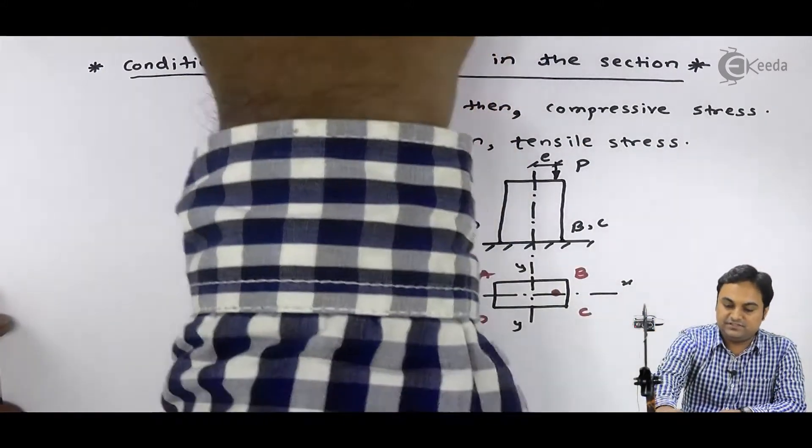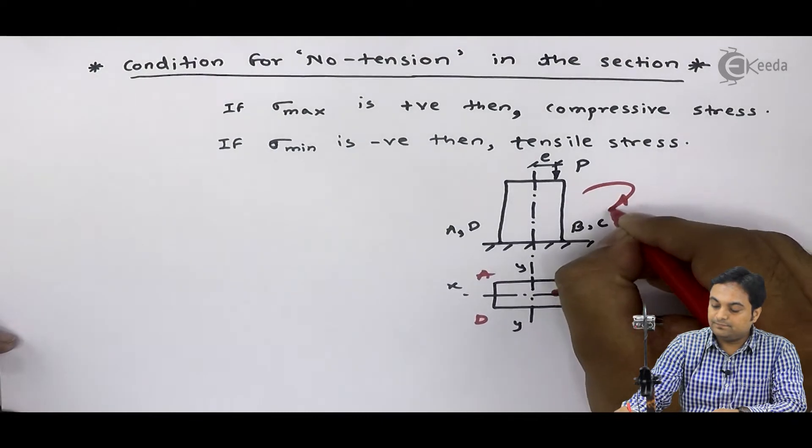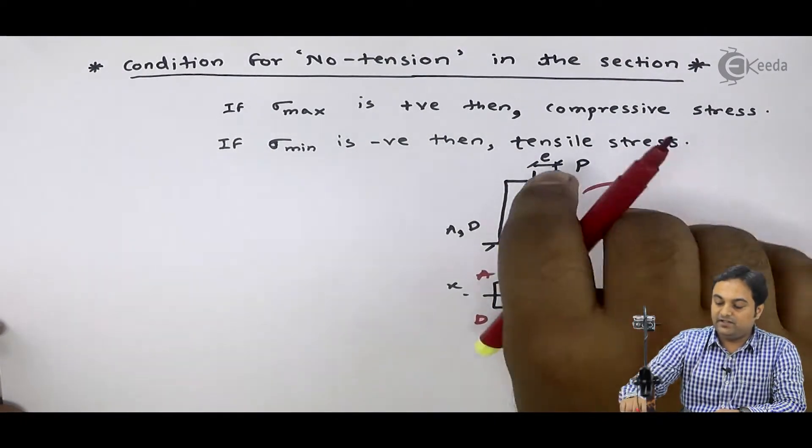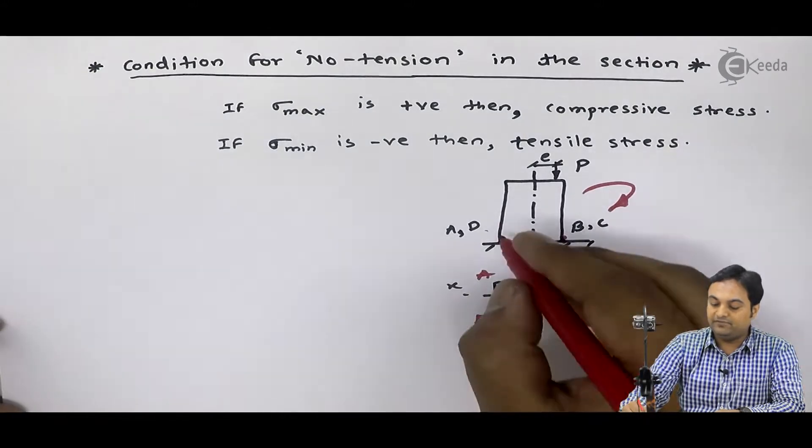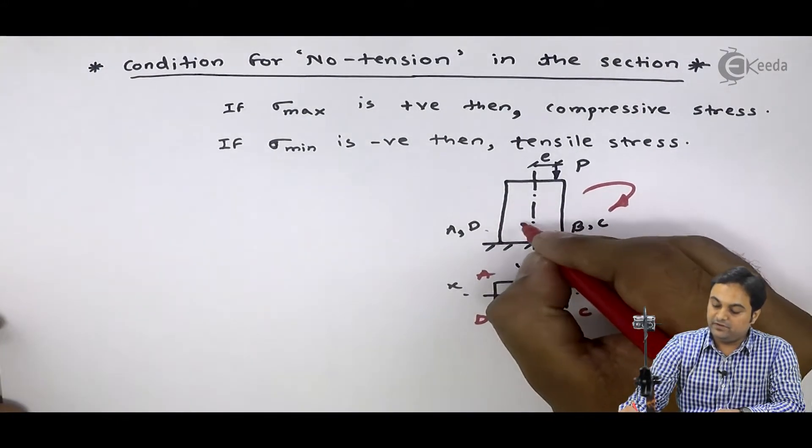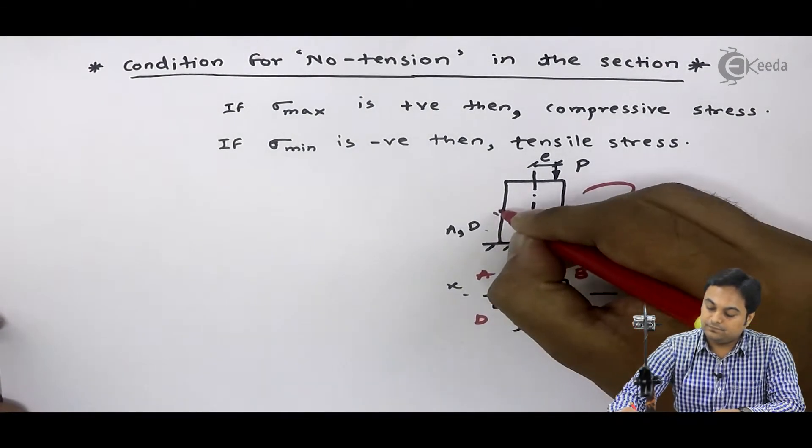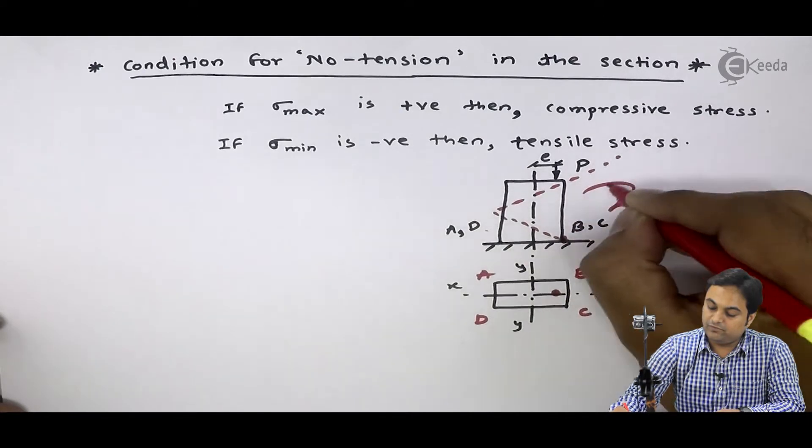It will be turning like this. The ends b, c, they would be pressed or ad would be lifted. That is, this end ad, it will be lifted means it will be something like this. The structure will move.